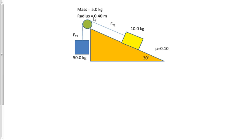What happens then is it breaks up into a force tension 2 pulling those blocks up, and a force tension 1 pulling it down. Let's consider that this direction going around will be positive. So we need to write three equations, one for each object in the system, in order to find this out.